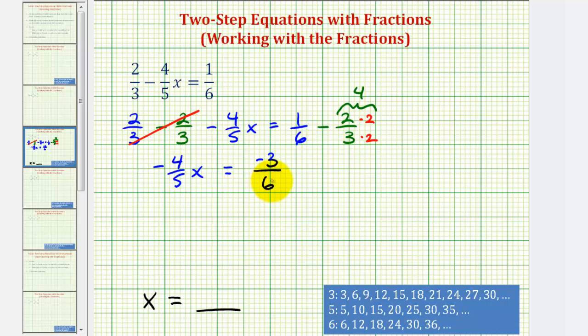So let's go ahead and simplify this now. We would have negative four-fifths x equals negative one-half. Here we just divided out the common factor of three.